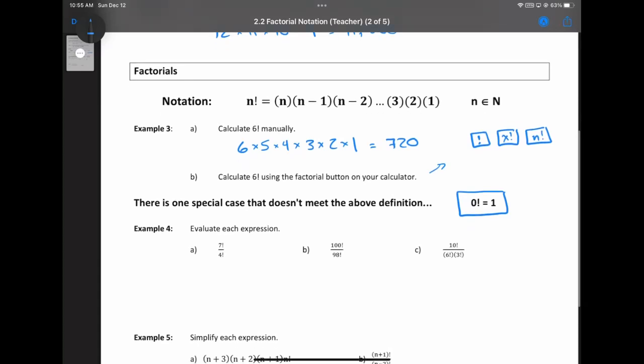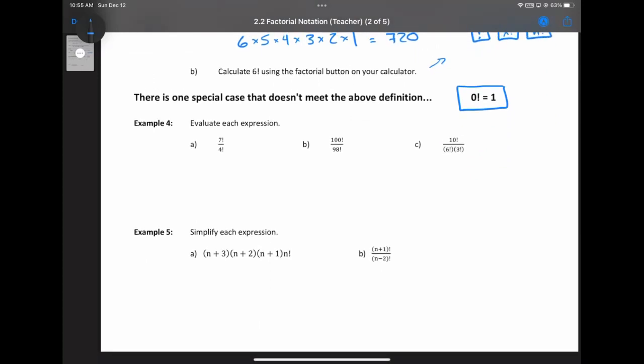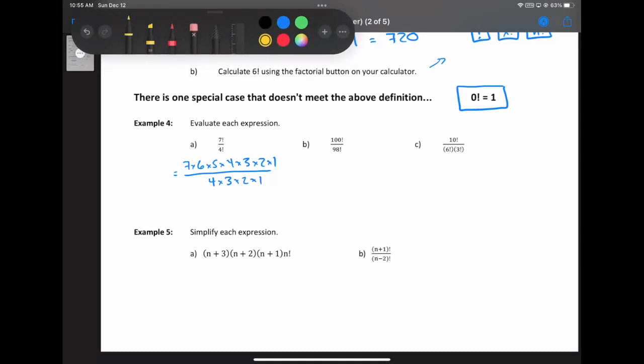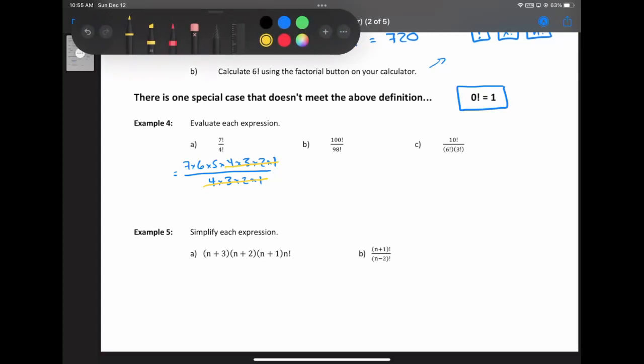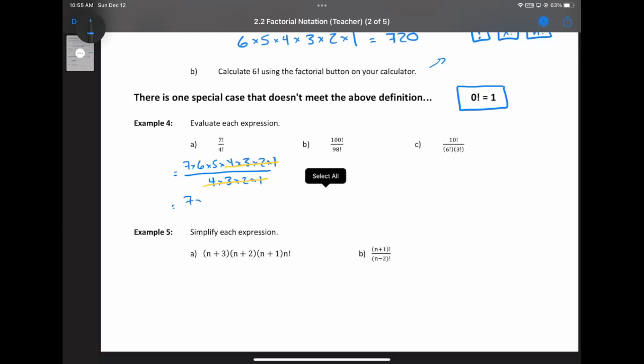Example four, let's evaluate some expressions here. Seven factorial divided by four factorial. I'm going to show you that there's a long way to do it and then there's a short way to do it. Seven factorial by definition is seven times six times five times four times three times two times one. And on the bottom four factorial is four times three times two times one. If I look at those carefully, you'll realize that I can cancel out some stuff there, specifically the four, three, two, and one on the top and bottom cancel. Then I'm just left with seven times six times five, which is 210.